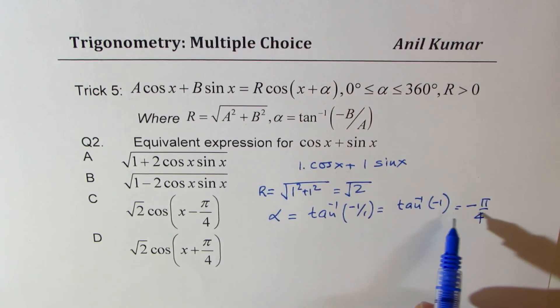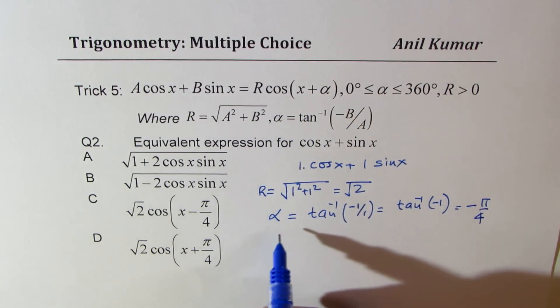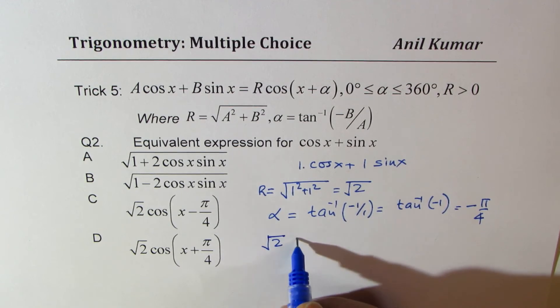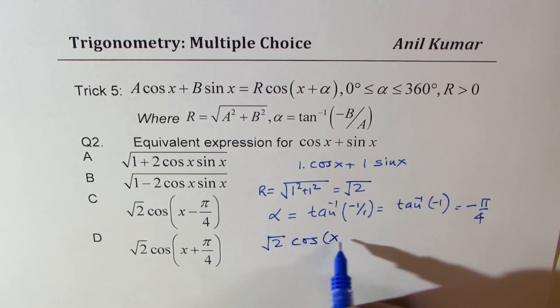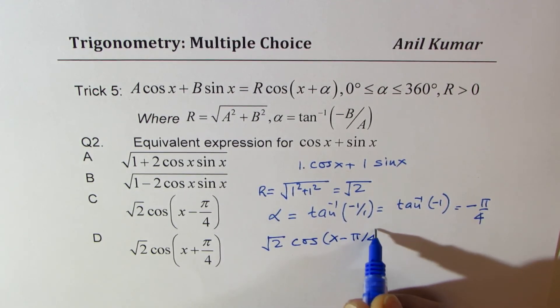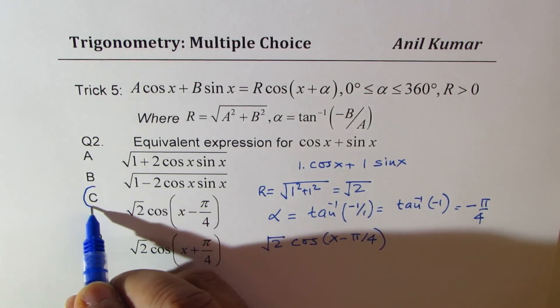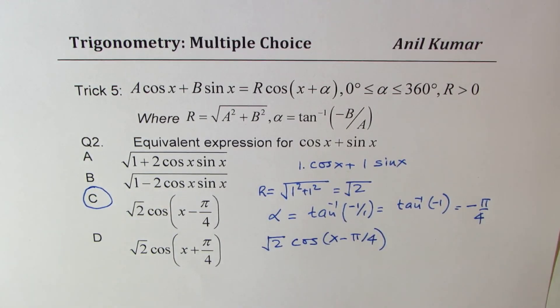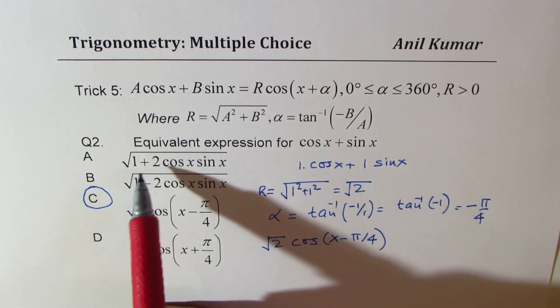So when it is minus pi by 4, we get the formula as square root 2 cos(x minus pi by 4). So option C is the right option.